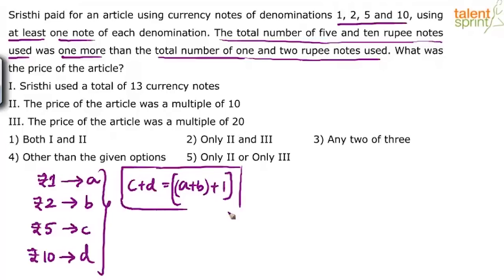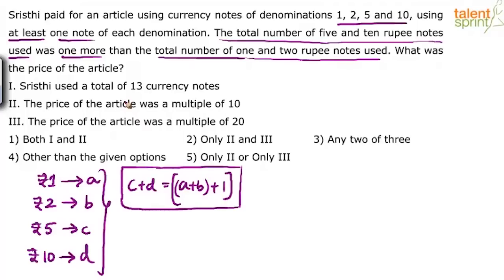Whatever is given in the question is applicable for all three statements. When solving data sufficiency questions, you must follow a proper flow — verify only statement 1 first, then only statement 2, then only statement 3. If independently all three statements fail to give the answer, then we go for combinations. When looking at statement 2, do not consider data given in statement 1, and vice versa.